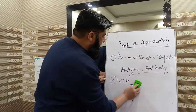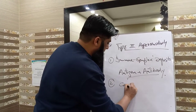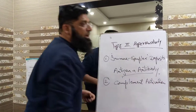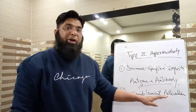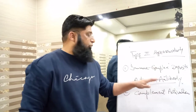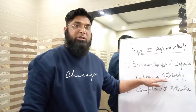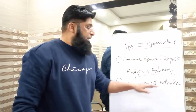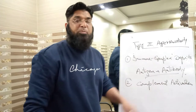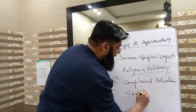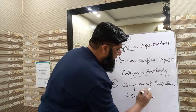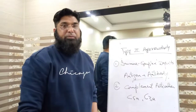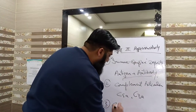Number two: complement activation. The complement system activation, especially C5a and C3a, causes an inflammatory process which is the third component: chronic inflammation.